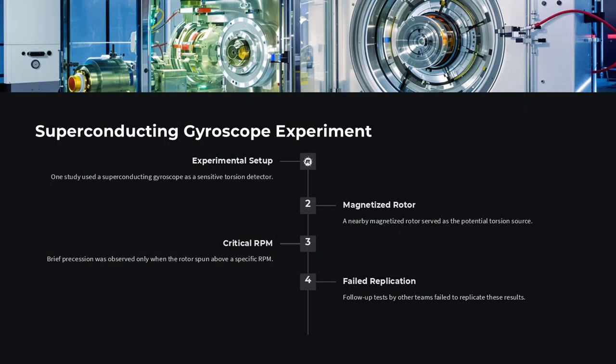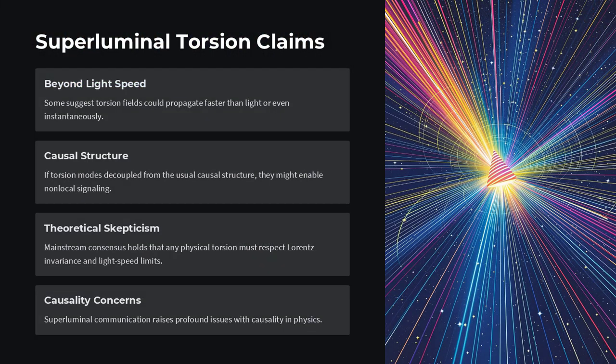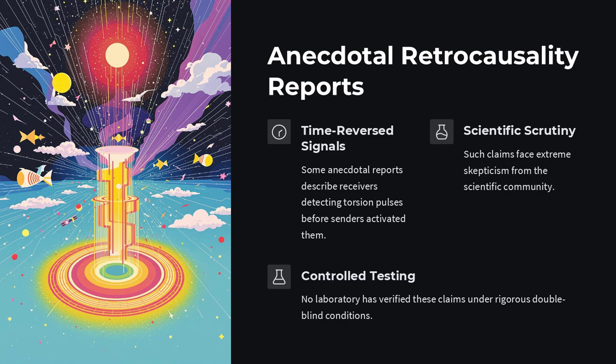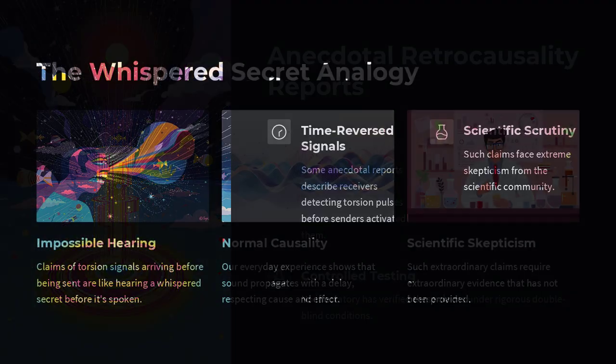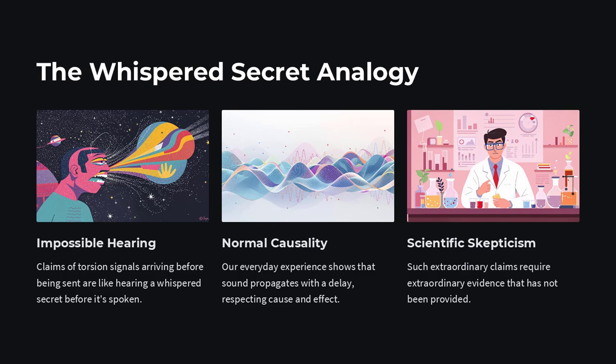Are there any mainstream hints? While no laboratory has yet reproduced those early claims under strict controls, related ideas have surfaced in modern spintronics. Researchers have studied how polarized electron spins in materials like yttrium iron garnet can support spin waves, magnons that propagate information without electric currents.